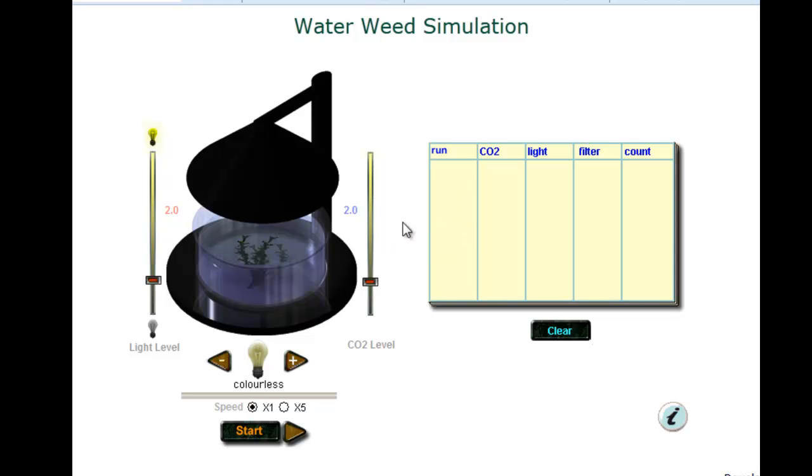Okay, so here's the actual link, and what we have is the waterweed, the Elodea plant sitting in water. We can adjust the light, we can adjust the carbon dioxide, the color of the light, and also the light level.